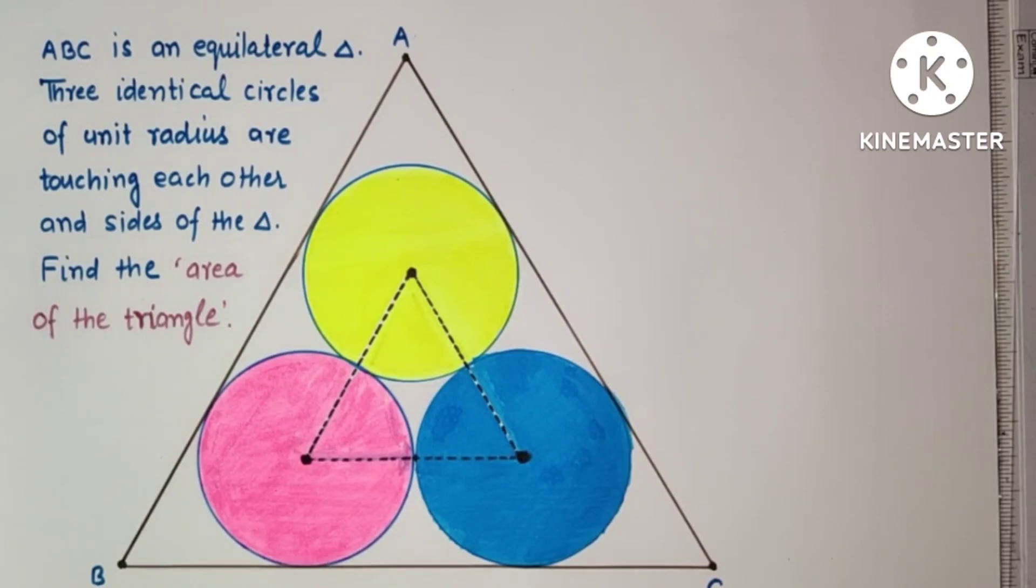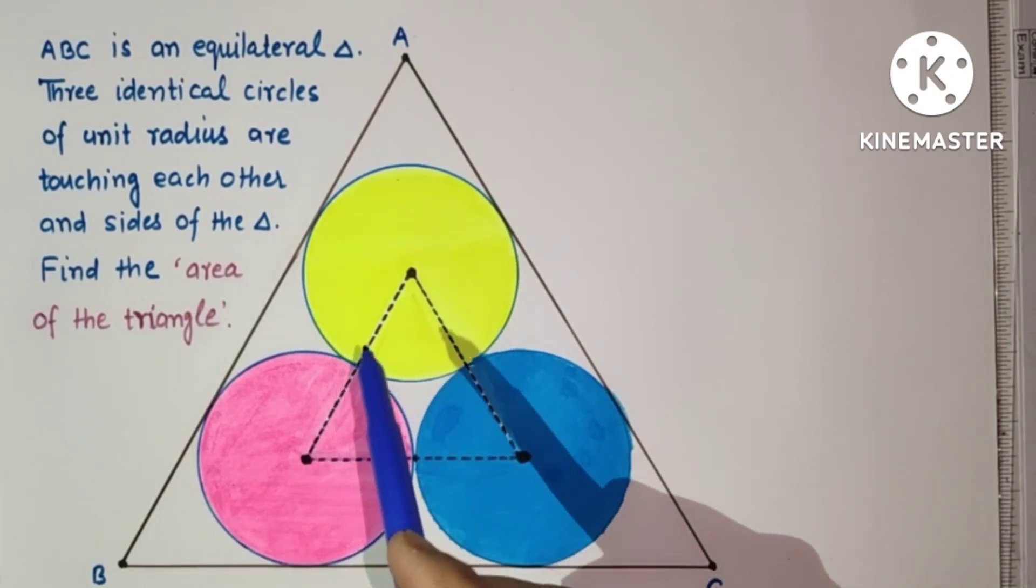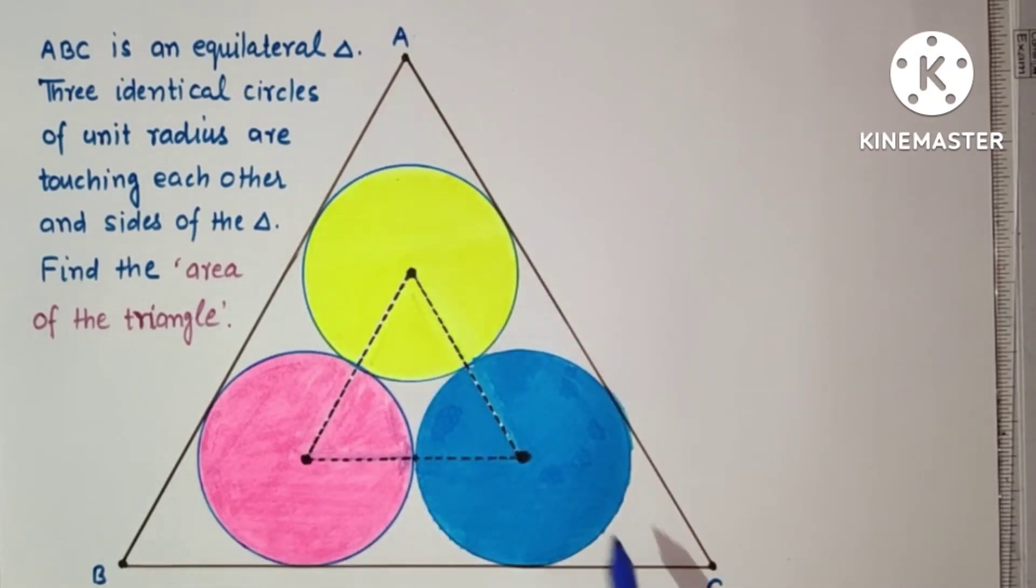Hello everyone, you all are welcome to this channel. Today we will discuss a 10th grade question which was asked in IIT-JEE 2005. Given that ABC is an equilateral triangle and three identical circles are touching each other and as well as touching sides of the triangle, and each circle's radius is one unit.